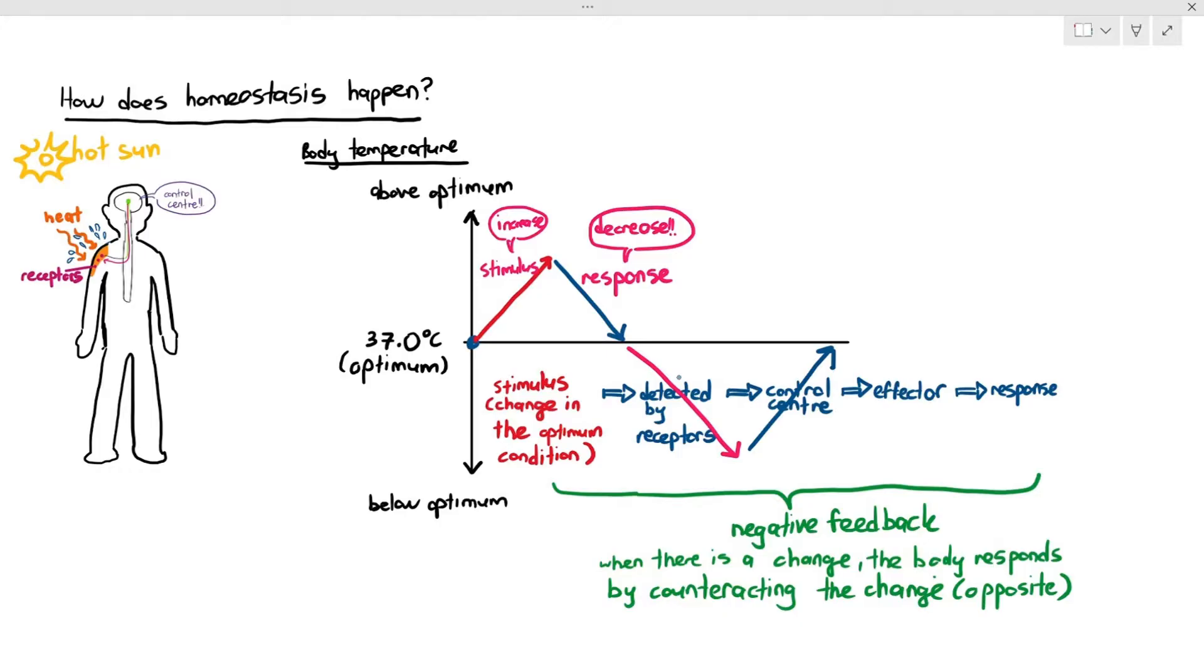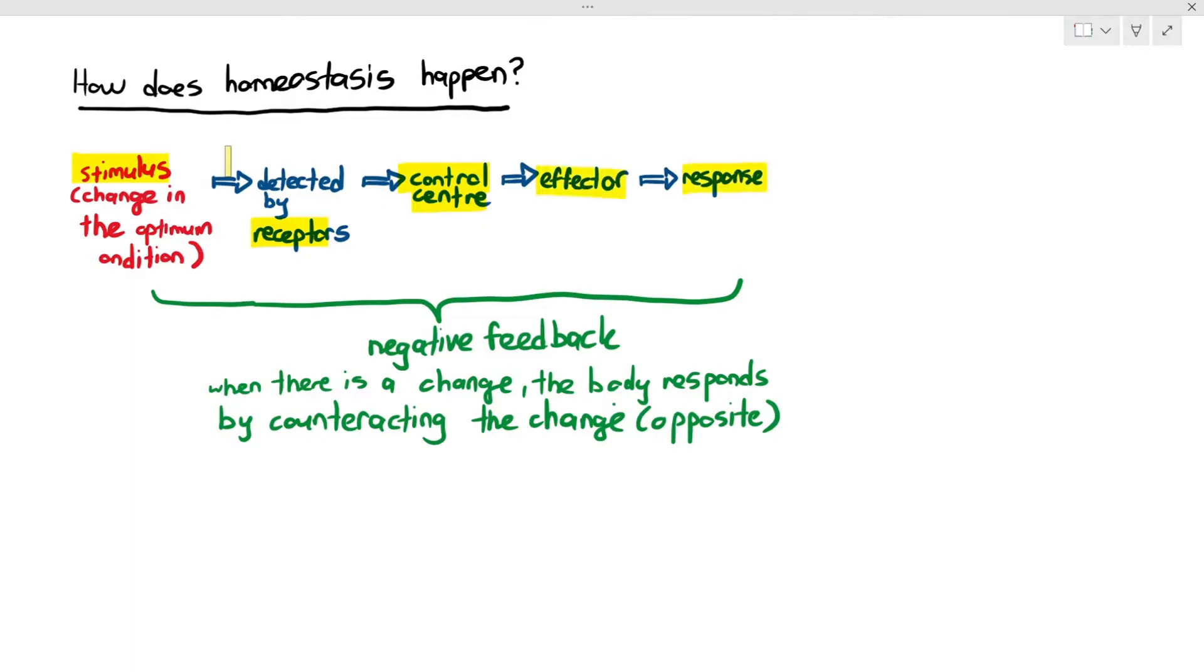So homeostasis has five points that you have to mention. If a question in the exam asks you, how does homeostasis happen? You just have to say that generally in homeostasis, the stimulus, where there is a change in the optimum condition, is detected by the receptors. The receptors send the signal to the control center, which sends the signal to the effectors, and the effectors produce a response, which is the corrective action. Why is it called the corrective action? Because if the stimulus caused an increase in body temperature, the corrective action is to decrease the body temperature. If the stimulus caused a decrease in the body temperature, then the response or the corrective action is an increase in the body temperature. And this encompasses something known as negative feedback. Negative feedback is just your body responding in the opposite direction.